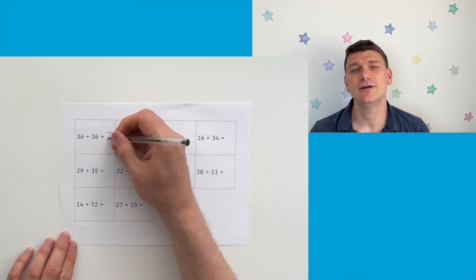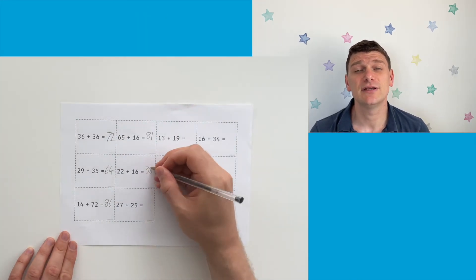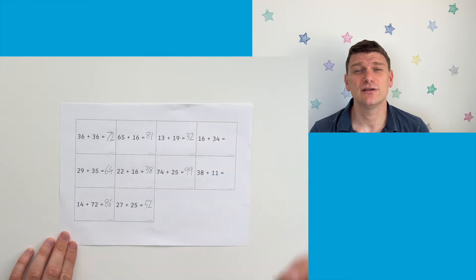First thing your pupils will need to do is work out each calculation and note down the answers on the worksheet. They can then cut out these answers and put them into the grid under the correct headings.